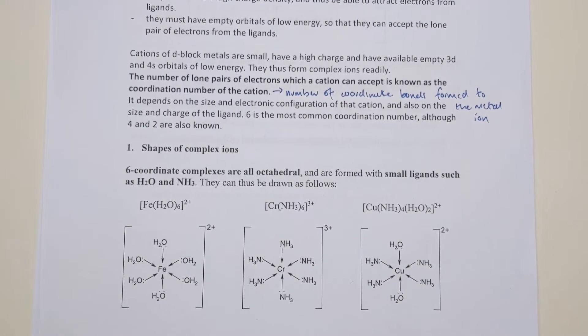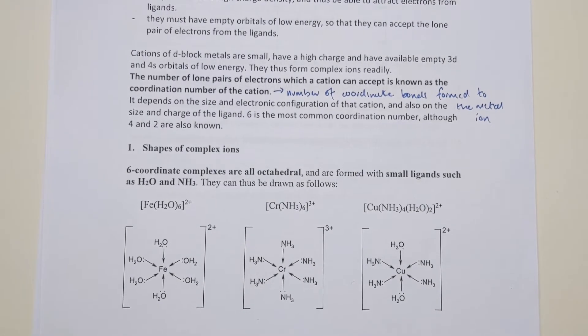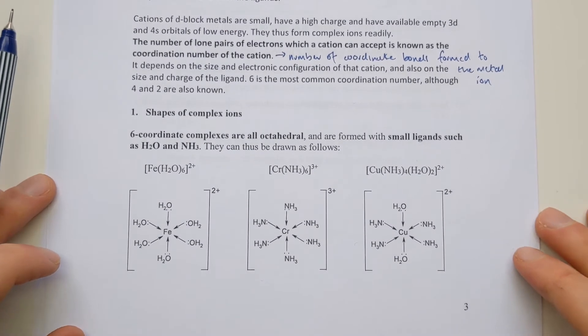However, there isn't really a hard and fast rule about what the coordination number should be for a particular metal ion. In a lot of cases, they will just have to give you information to work out what that's going to be. You can't just work it out yourself in every case. However, there are some general trends you can think about.